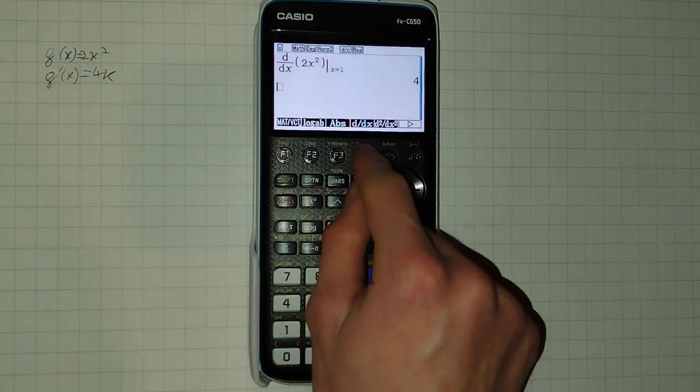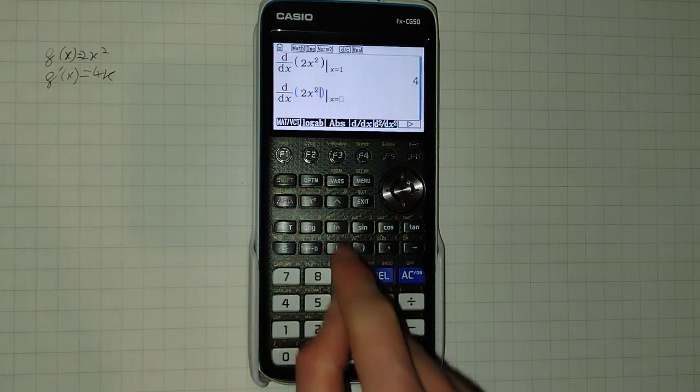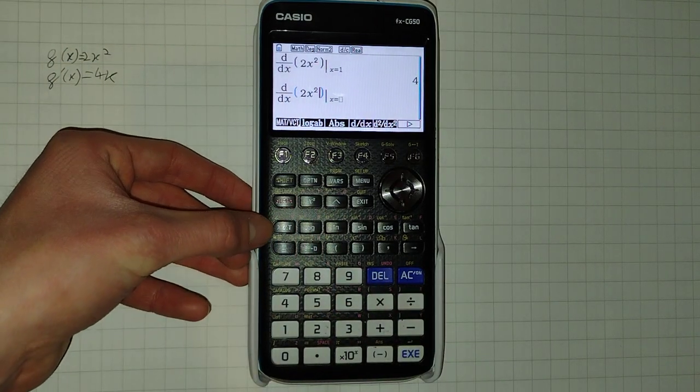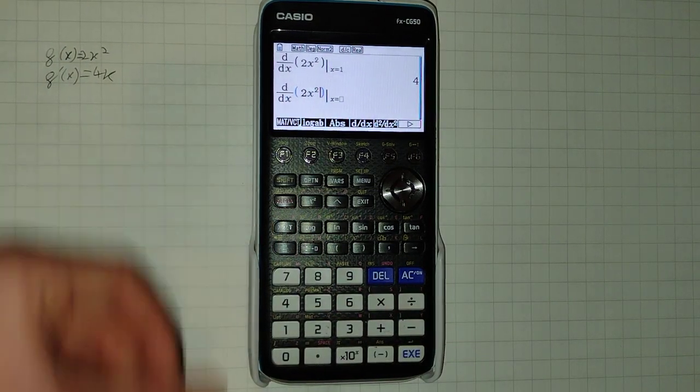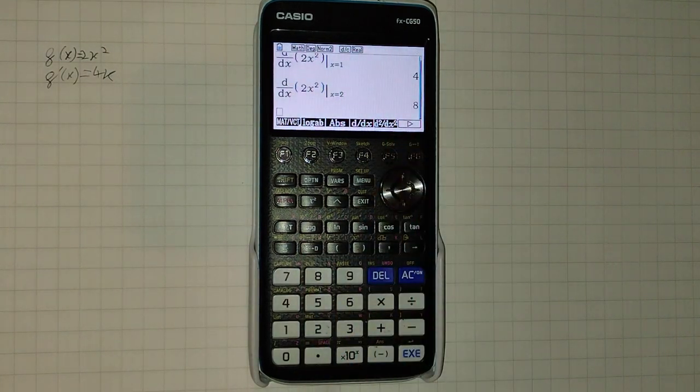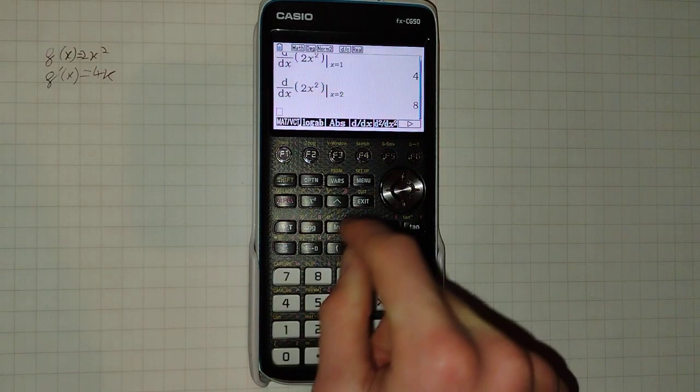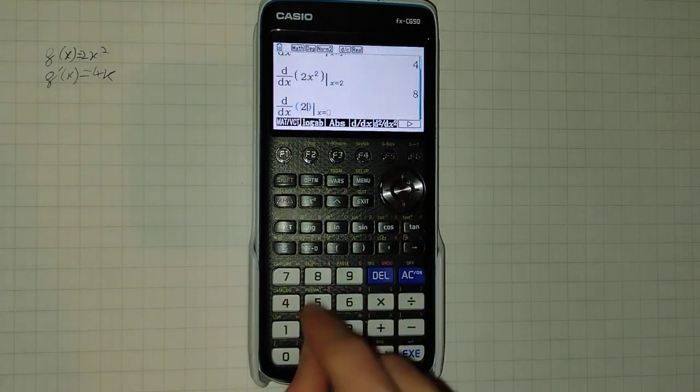And if we run it again, by the way, x is this key here, x v to t. And let's see if we put in 2, we'll get 8. And so on. Then you can, of course, use much, much more complicated ones.